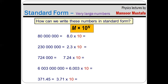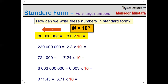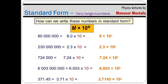The final step is to put the power of 10, which is the value of n. The value of n is decided by how many positions the decimal has moved from its original position. In the first example, the decimal has moved seven digits to the left, so the power of 10 will be 7. This is how the number is converted into standard form. For the rest of the numbers, pause the video and find the value of n yourself, then check your results.